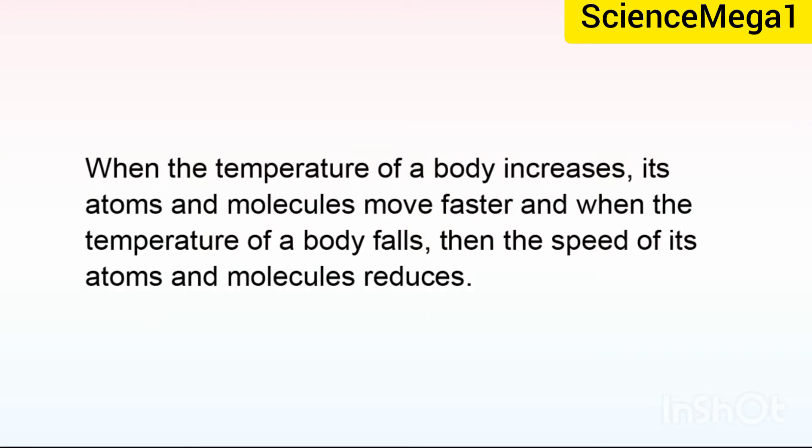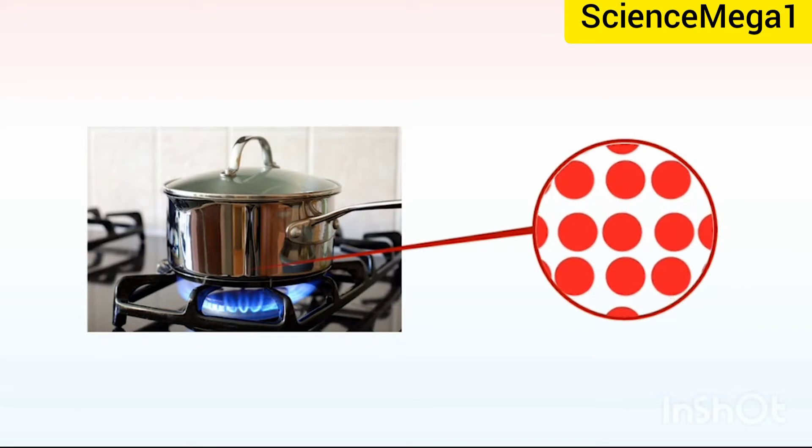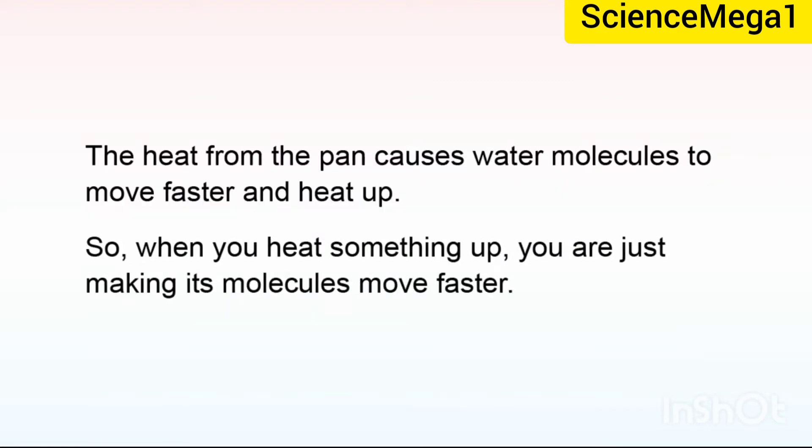When the temperature of a body increases, its atoms and molecules move faster, and when the temperature of a body falls, then the speed of its atoms and molecules reduces. For example, when you heat up a pan of water, the heat from the stove causes the molecules in the pan to vibrate faster, causing the pan to heat up. The heat from the pan causes water molecules to move faster and heat up. So when you heat something up, you are just making its molecules move faster.